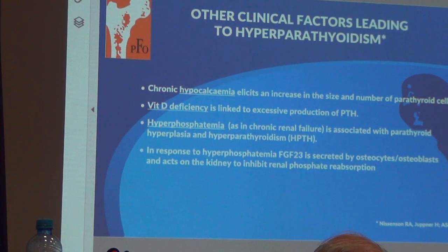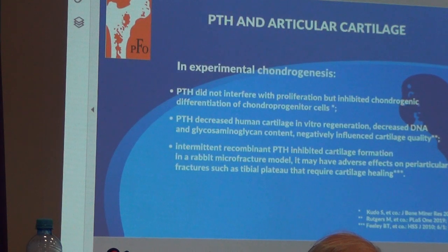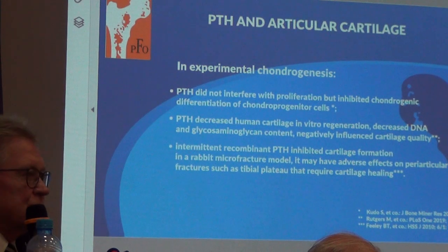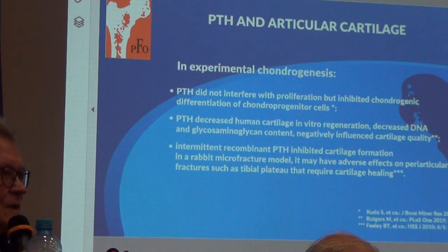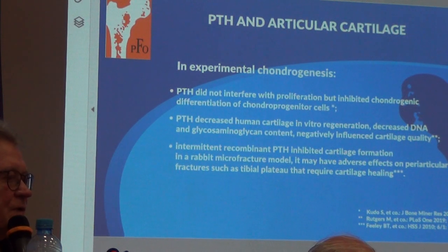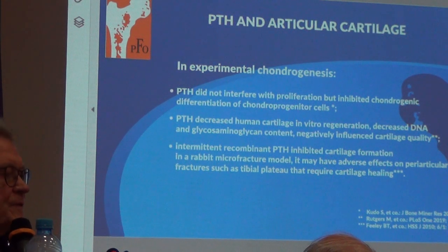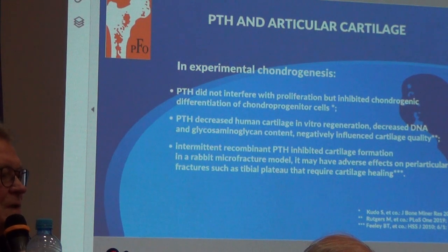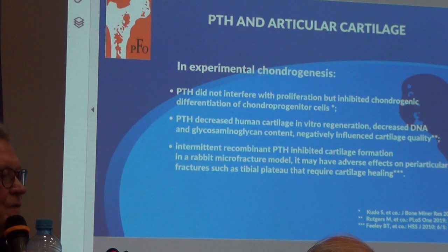In response to hyperphosphatemia, fibroblast growth factor is secreted by osteocytes and acts on the kidney to inhibit phosphate absorption. So what is going on in soft tissue when we simultaneously observe high levels of parathyroid hormone and calcium? PTH does not interfere with proliferation but inhibited osteogenic differentiation of osteoprogenitor cells. PTH also decreased human cartilage in vitro regeneration and decreased DNA, glucose, and glycan content, influencing the quality of cartilage.